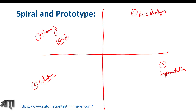In spiral model we work in iterations. Let's say I'm planning to work for module A. First we'll build the prototype for module A and we will test it. The tester will test it, and then we go for review from the customer, and then the last one is approval from the customer. So these are the four phases we follow to create the prototype.